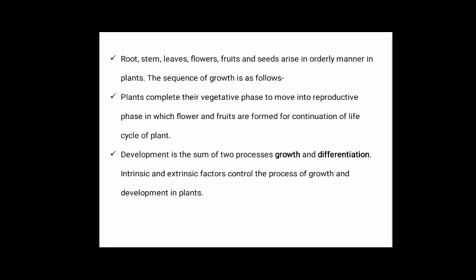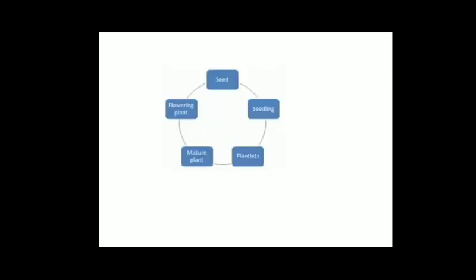The cycle of plant development is the sum of two processes which includes growth and differentiation. Intrinsic and extrinsic factors control the process of growth and development in plants. First we sow a seed, the seed germinates to form a seedling, from the seedling plantlets are formed, from the plantlets a mature plant is formed, the plant produces flowers, and after fertilization the ovules turn into seeds, and the cycle repeats.